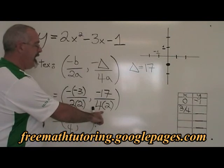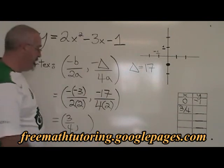4 times 2 is 8, so our y coordinate is negative 17 over 8.